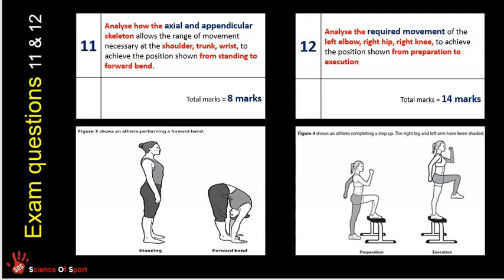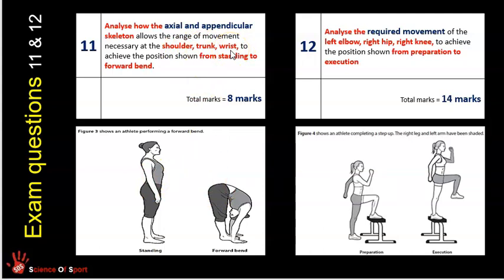That's a really important thing to understand. Question 11, if it says axial and appendicular skeleton, basically analyse how they contribute towards a particular movement — it only wants you to talk about the skeletal system and not the muscular system. So this question is quite specific. You know it's more extended — there are eight marks available. You know the specific movement they want you to talk about, from standing to forward bending, and the image supports that. You know the three specific areas of the body they want you to focus on, and you have to analyse the axial and appendicular elements of the skeleton, not muscles.